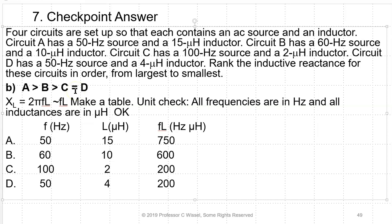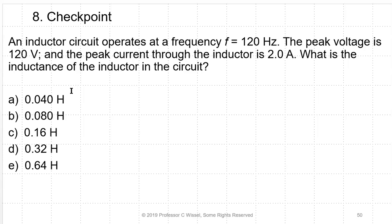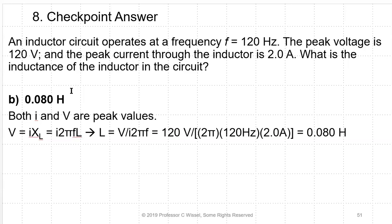Practice problem: an inductor circuit operates at 120 Hz with a peak voltage of 120 V and peak current of 2 A. Both values are peak, so we can relate them directly. The peak voltage equals peak current times inductive reactance: V-peak = I-peak × XL = I-peak × 2πFL. Solving for L: L = V-peak / (I-peak × 2πF) = 120 / (2 × 2π × 120) = 80 millihenries. Answer: B.